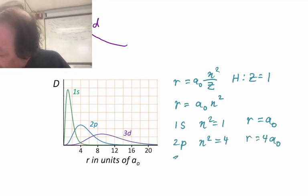And finally, we have 3d, where n squared is 9, 3 squared. And so r is 9a0.